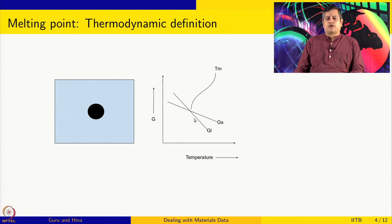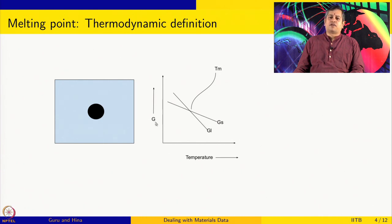Above the melting temperature, the liquid free energy is lower than the solid free energy, so the system prefers to be a liquid. Below it, the solid has lower free energy, so the system prefers to be a solid. The melting temperature is where solid and liquid have the same free energy — the intersection point of their free energy curves. This definition is more general and applies to other transformations as well.